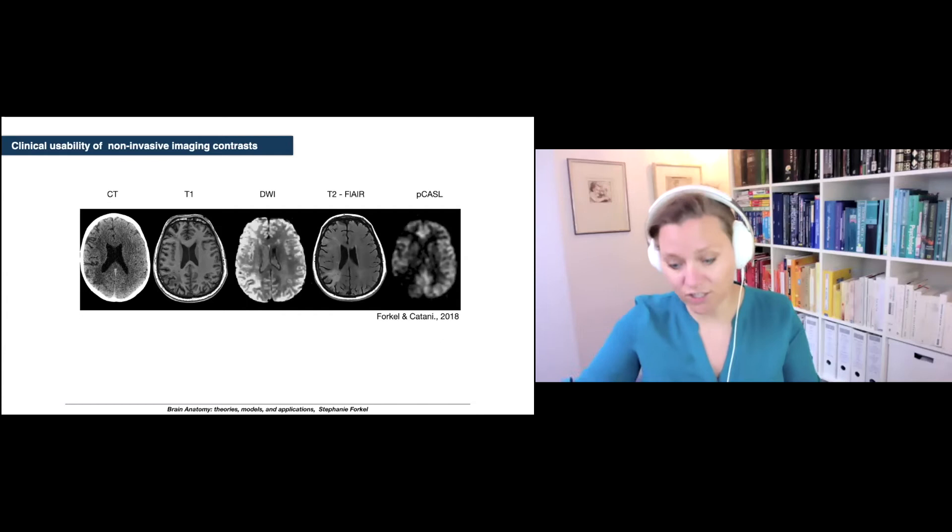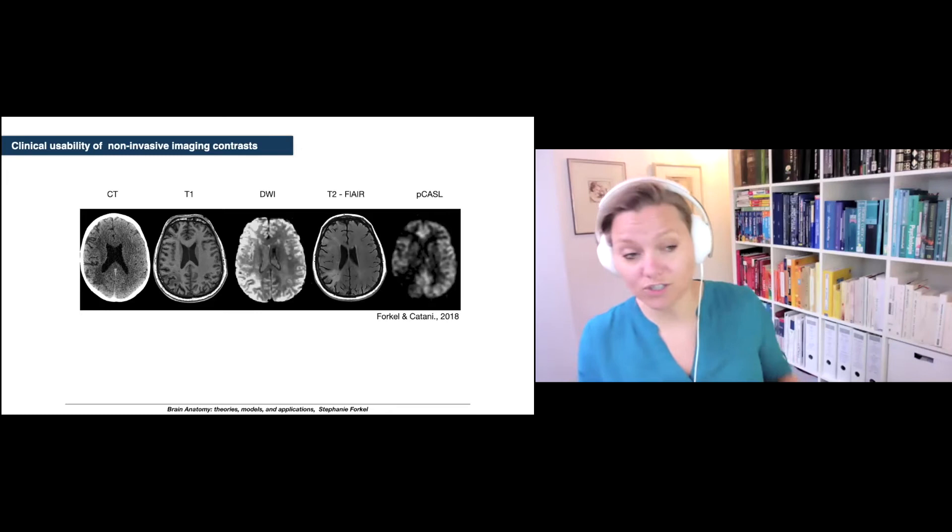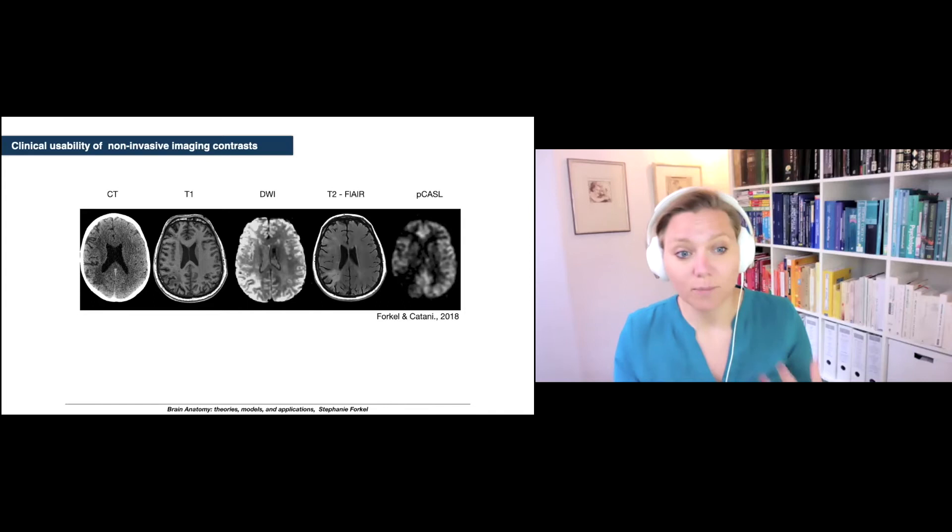I want to give you examples of what that actually means. This is taken from a publication from 2018 where we imaged stroke patients and you see this is the same patient with different modalities. We have the CT scan on the left, a classical T1 weighted structure scan is the second image, then you have a diffusion weighted imaging scan, a T2 FLAIR which is a clinical pathological acquisition, and then perfusion scan.